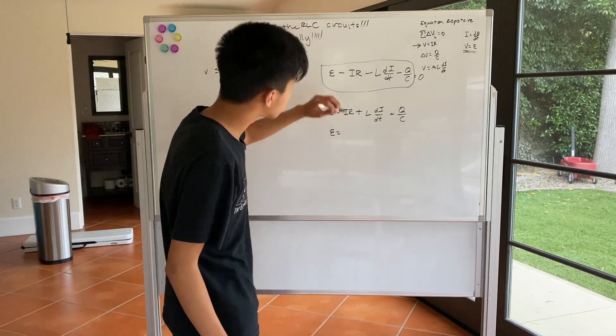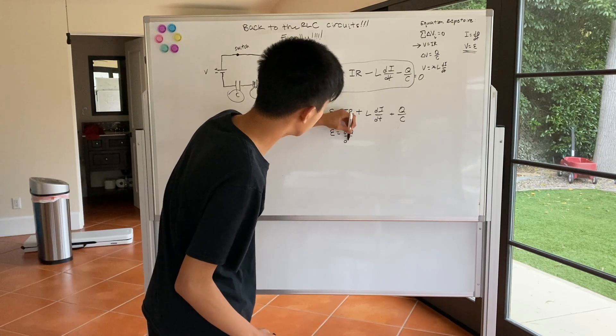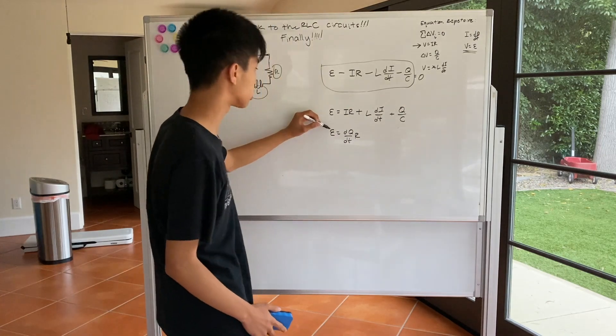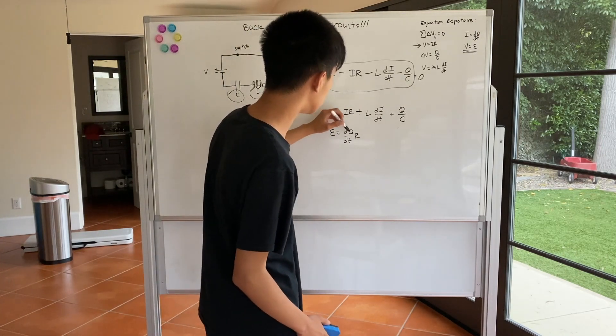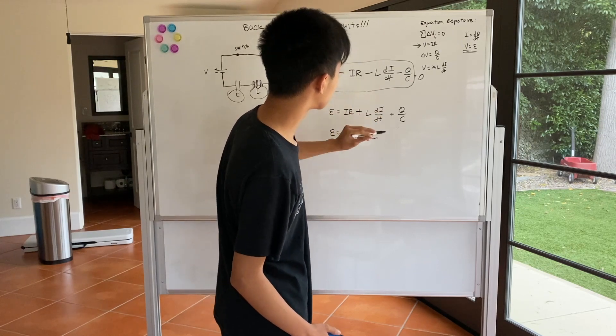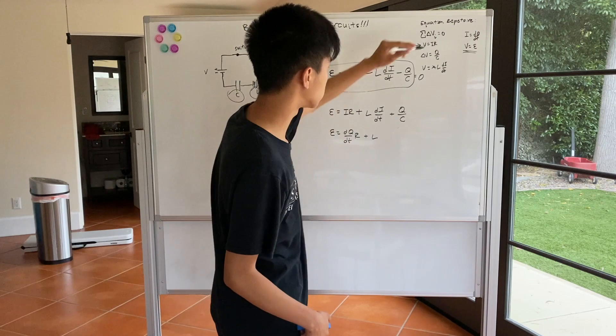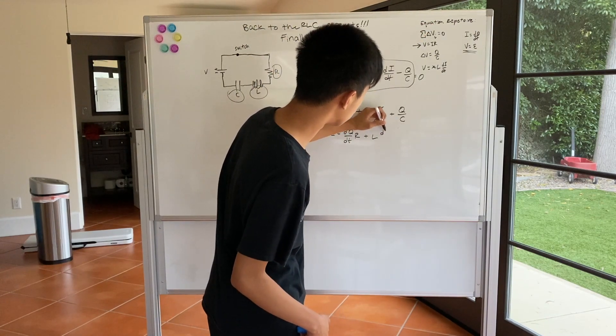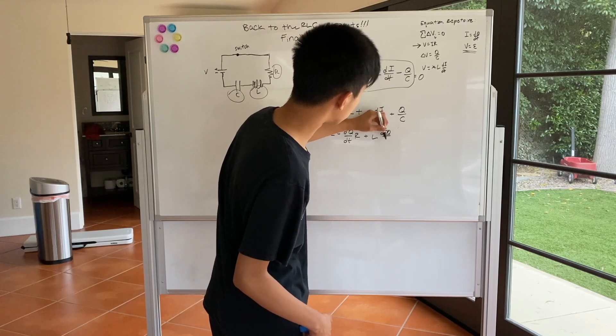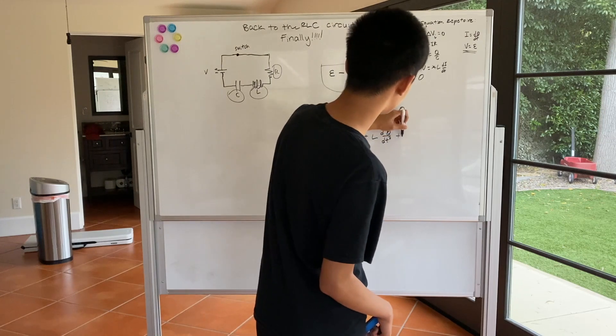Then, since I is equal to dQ dt, we can express this in terms of Q and T. So we have epsilon equal to dQ dt times R plus L. Well, we already have I to its first derivative. So the derivative of a first derivative is a second derivative. So that's D, second derivative of Q with respect to T, plus Q over C.